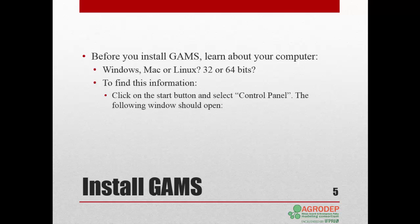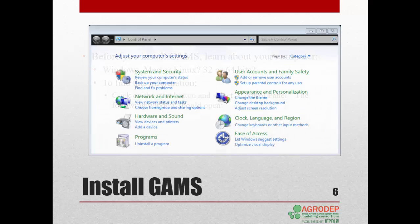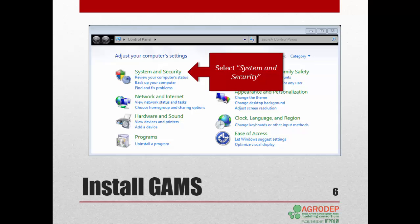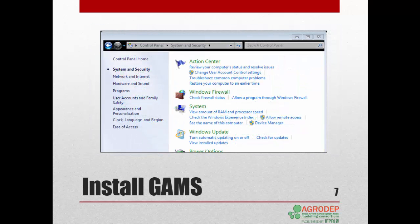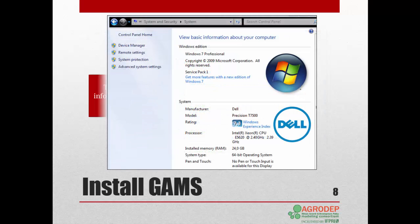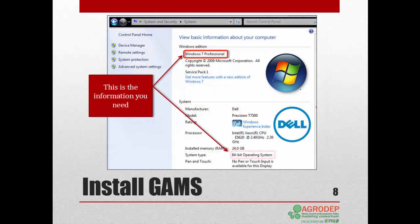On the Windows 7 system, click the Start button and select Control Panel. The following window will open. First select System and Security, then select System. Here you can see under Windows Edition that we have Windows 7 Professional installed, and under System we can see that the system type is 64-bit. You need to remember this information for when you go to the GAMS website and download the installation files.